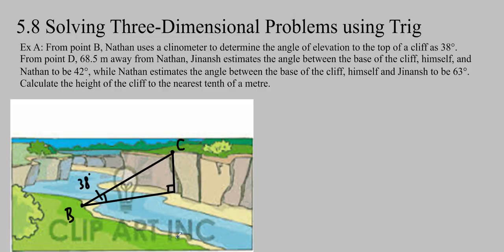So anyways, it says from point D, 68.5 meters away from Nathan, Jananch estimates the angle between the base of the cliff himself and Nathan to be 42 degrees. Okay, so let's just draw a triangle in for Jananch. Actually, okay, so you can see that I've drawn the D a little bit too close to the base so that it actually made it look like it was just a straight line there. So I'm just going to adjust that line so that I don't get a straight line. Otherwise, it's quite deceiving. So when you have a diagram, you just want to make sure that you try to make it look like there are no 90s, there are no straight lines where there may not be straight lines. So here's our D and we will label this 68.5 meters. That's how far they are apart.